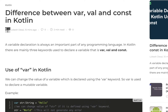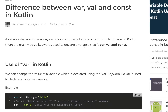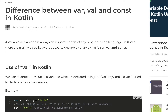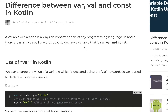Hello friends, welcome to Android for Dev channel. Today we are going to learn about how you can declare variables in Kotlin using var, val, and const keywords. This is going to be our reference material for today's tutorial — I will put the link in the description so you can refer to this later.